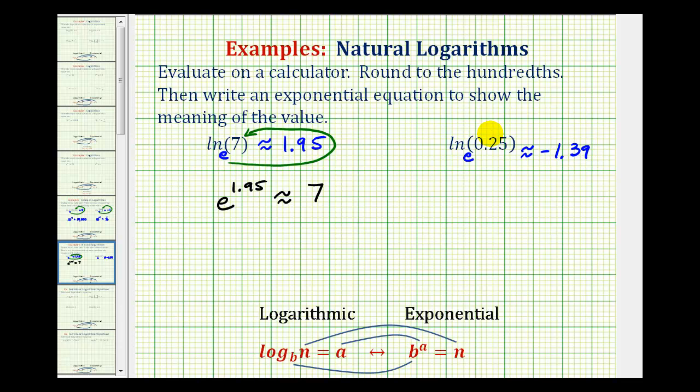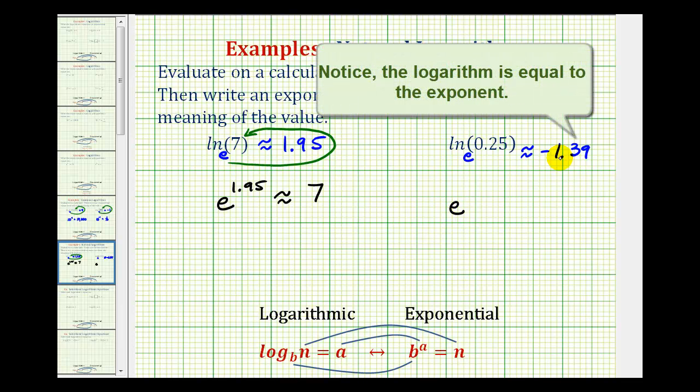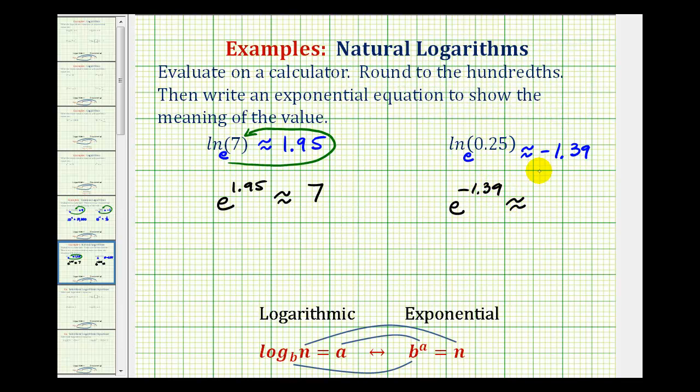And now to write the exponential equation. The base is e. The exponent is negative 1.39. And this should be approximately equal to the number 0.25.